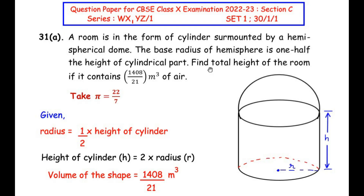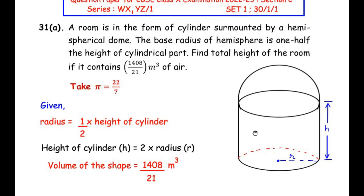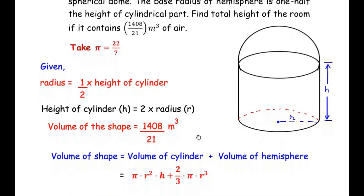The room contains 1408/21 cubic meters of air, meaning it is a hollow empty room entirely filled with air. So the entire volume of the shape equals 1408/21 cubic meters. We need to find the total height, which is the height of the cylinder plus the height of the hemisphere. The total volume equals the volume of the cylinder plus the volume of the hemisphere.